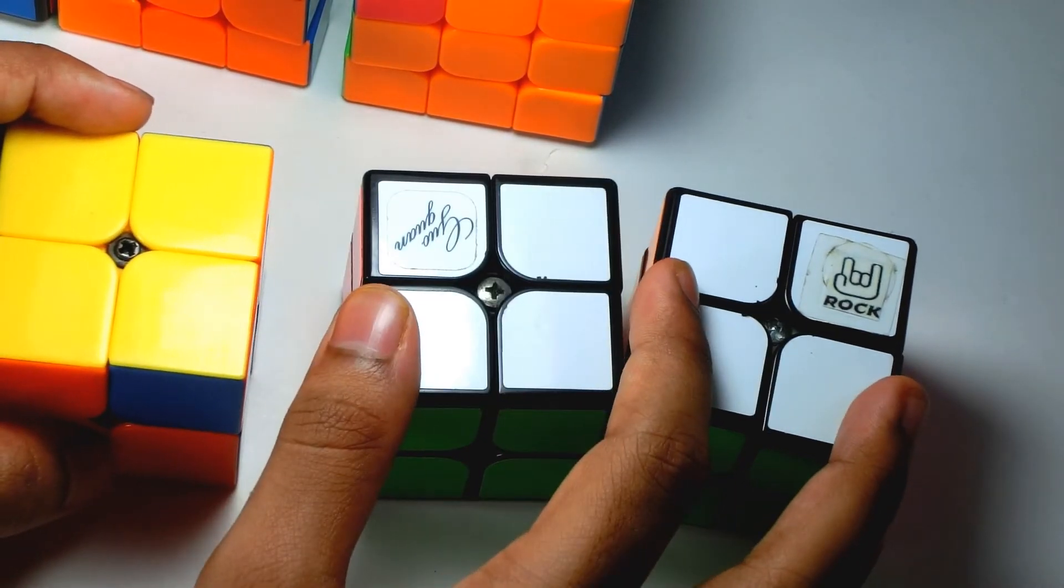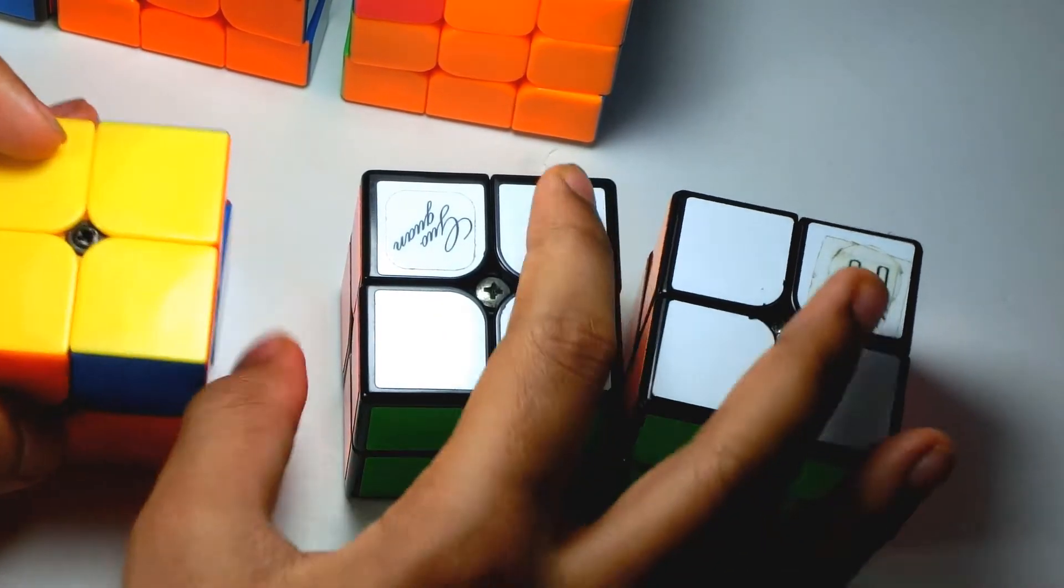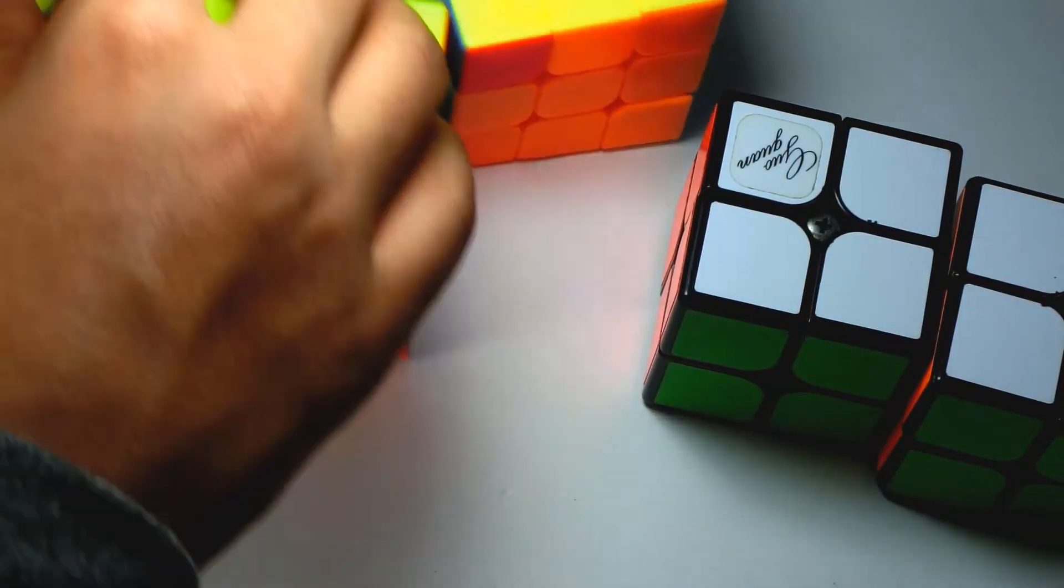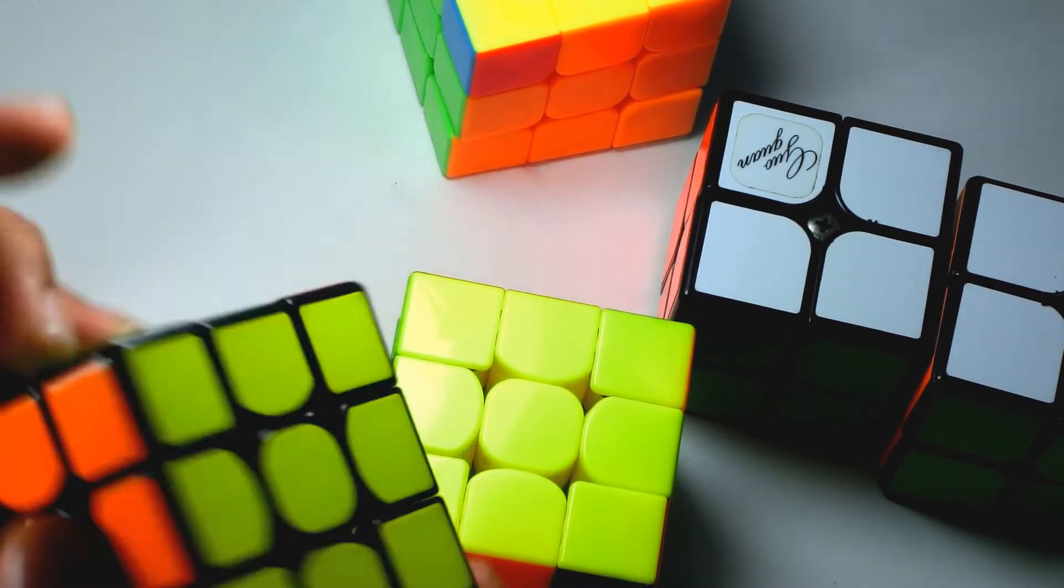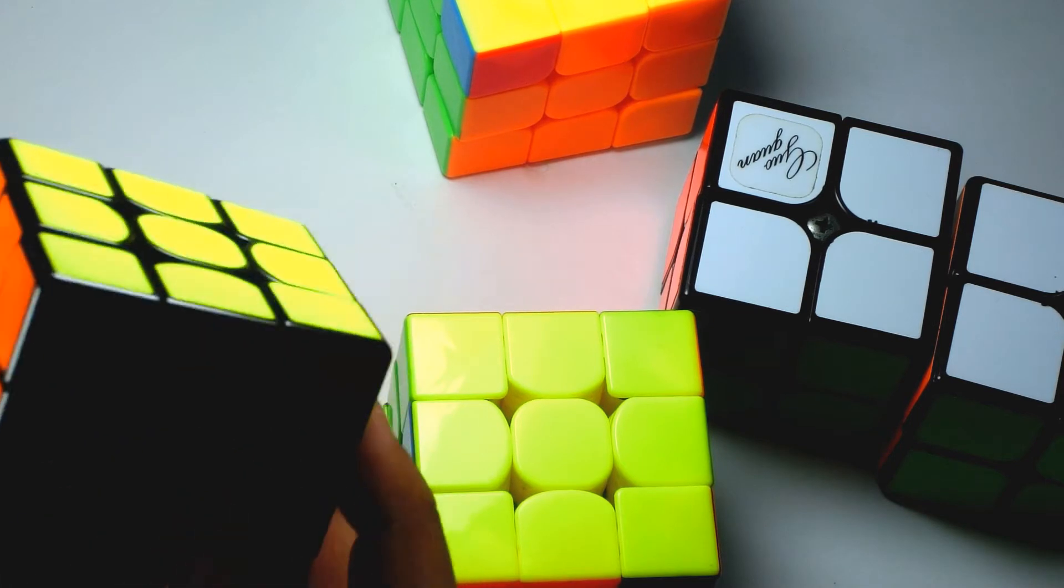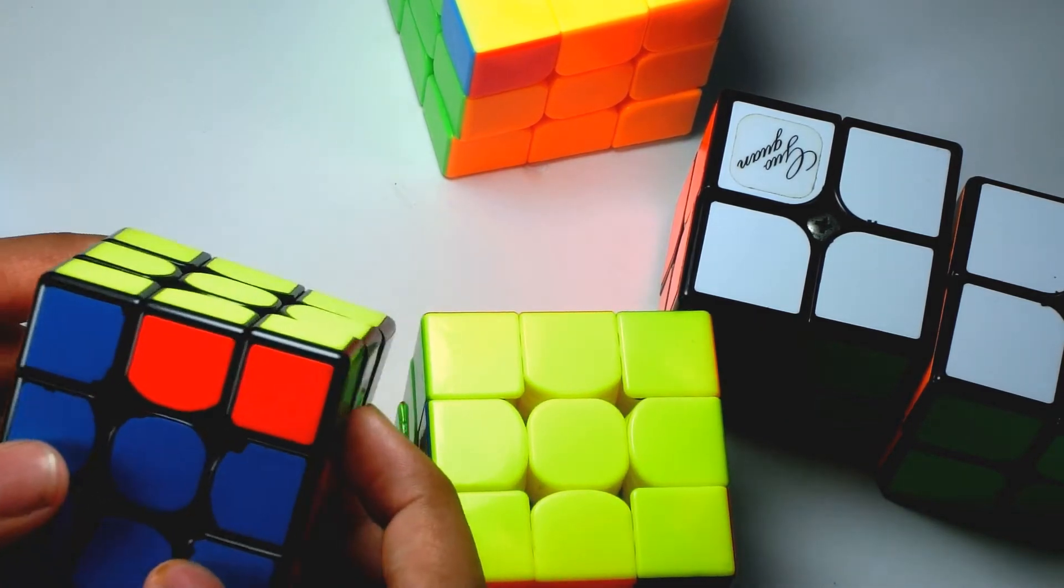So I think we're just going to jump right into this case. This case is similar to two cases now. This is where the optional algorithm comes into being. As you guys know, this is the J A perm, the J B permutation to be more precise.